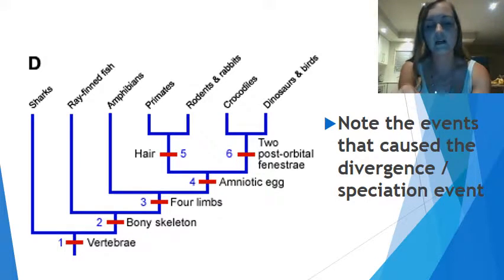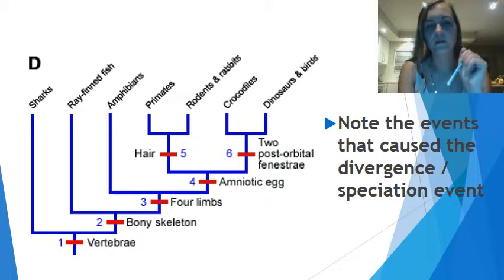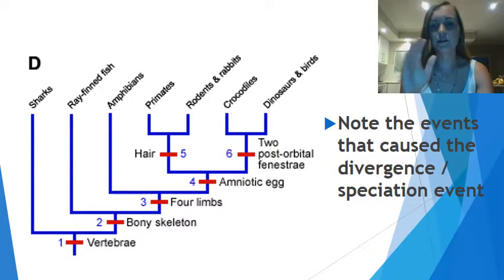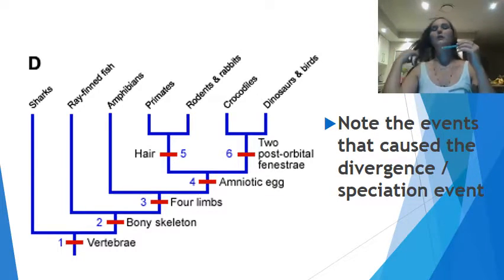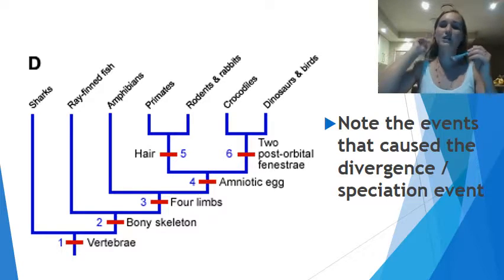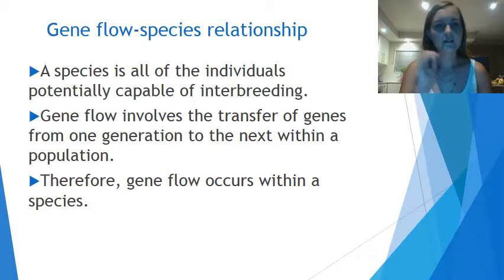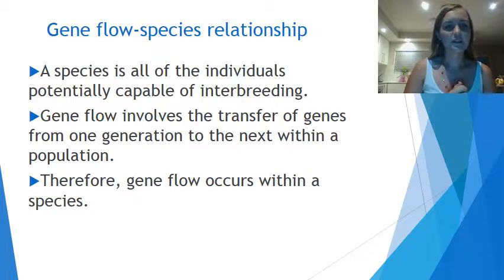Up here you can see hair versus no hair, and post-orbital fenestrae — I can't tell you exactly what that means, but it does mean something to do with the bony structure around the eye. So, gene flow species relationships.